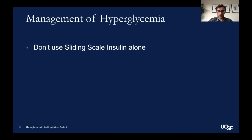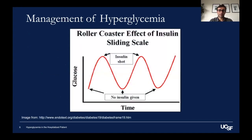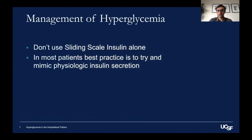So how do we manage hyperglycemia? Firstly, we don't use sliding scale insulin alone. When you use isolated sliding scale insulin, it creates something of a rollercoaster effect. For example, if a patient has a significantly elevated glucose and receives sliding scale insulin, their glucose precipitously drops. But because we haven't provided them a basal insulin, their glucose eventually rises back up, then they get more sliding scale insulin, then it comes back down. This rollercoaster effect is suboptimal.